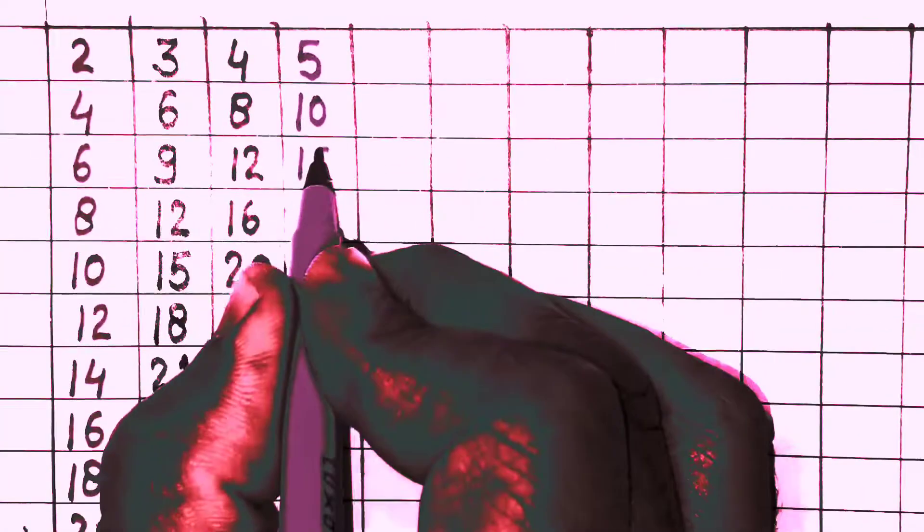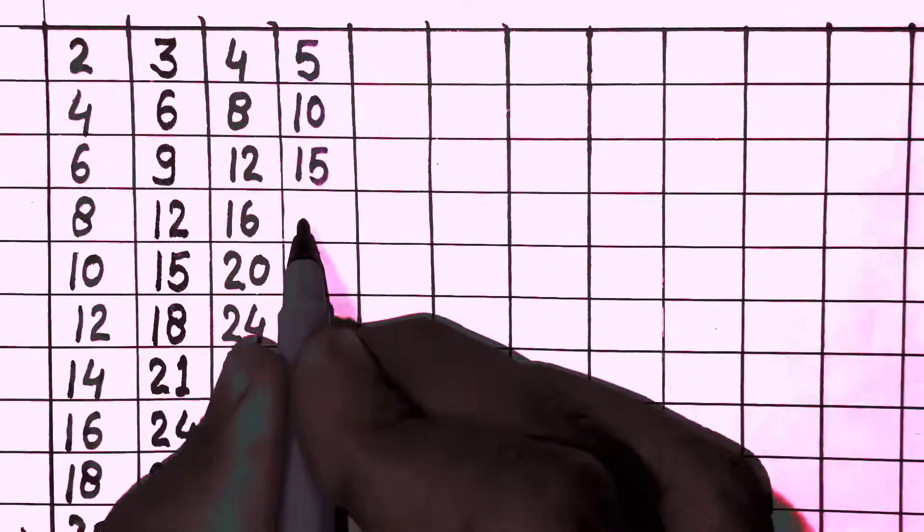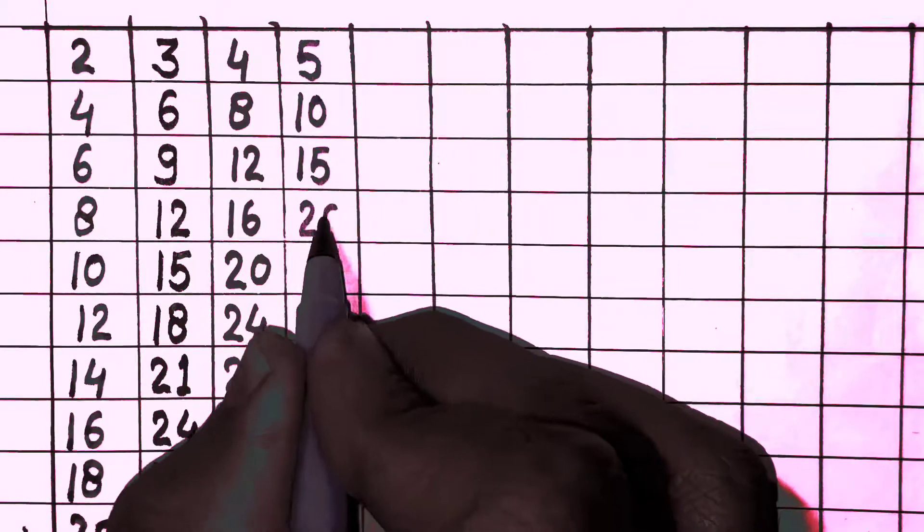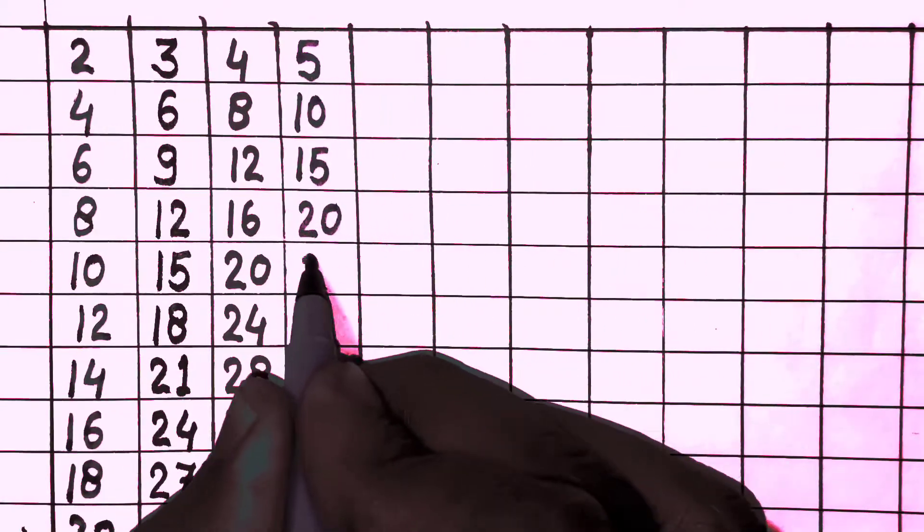Next, table of 5: 5 times 1 is 5, 5 times 2 is 10, 5 times 3 is 15, 5 times 4 is 20, 5 times 5 is 25.